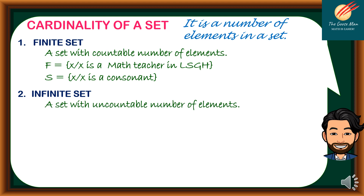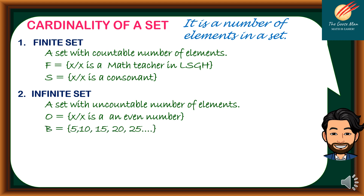The second type is an infinite set — a set with an uncountable number of elements. For example, O = {X | X is an even number}. Another example: B = {5, 10, 15, 20, 25, ...} and so on and so forth.